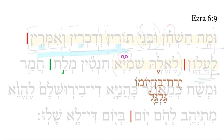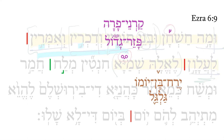The first one is a Yerach Ben Yomo or Galgal. The second one in purple is a Carne Farah or a Pazer Gadol. You can see in the second word of the verse, I've highlighted that Pazer in purple. The Pazer and Pazer Gadol look nothing like each other, even though they are both fourth-level disjunctive accents.